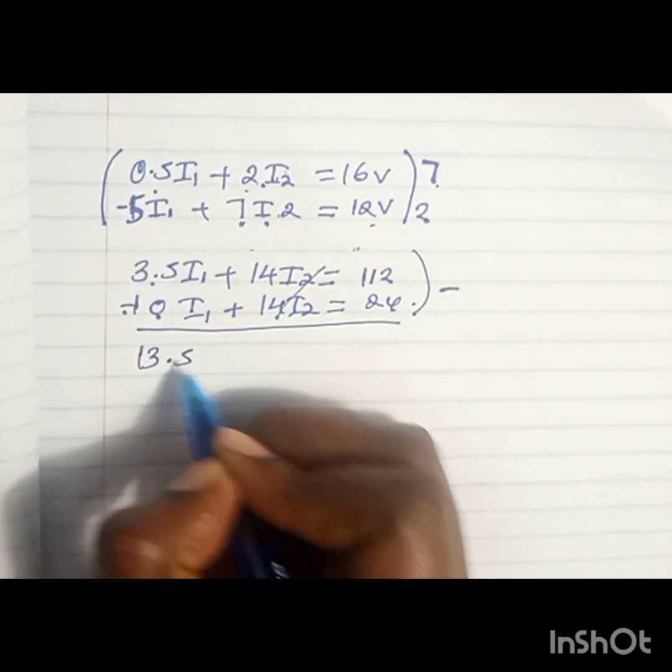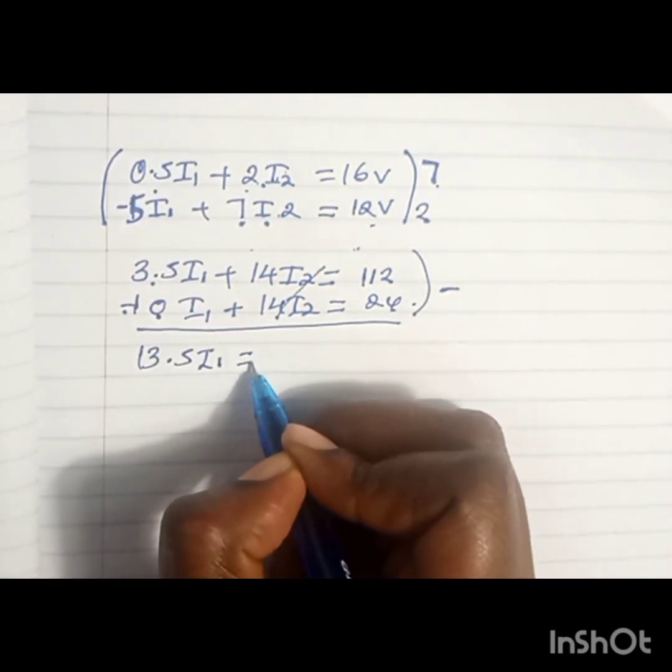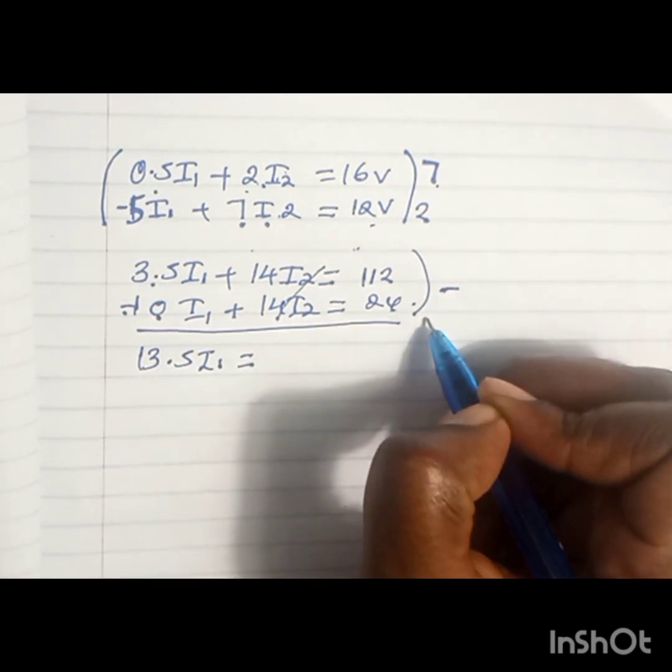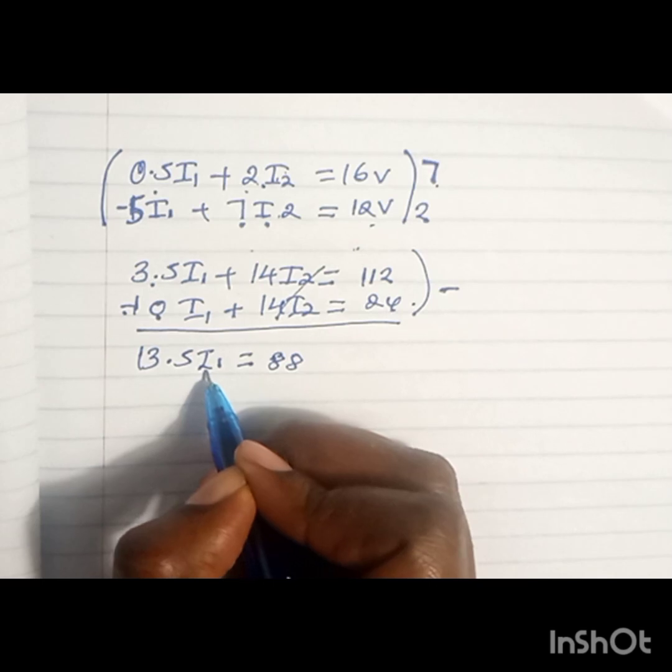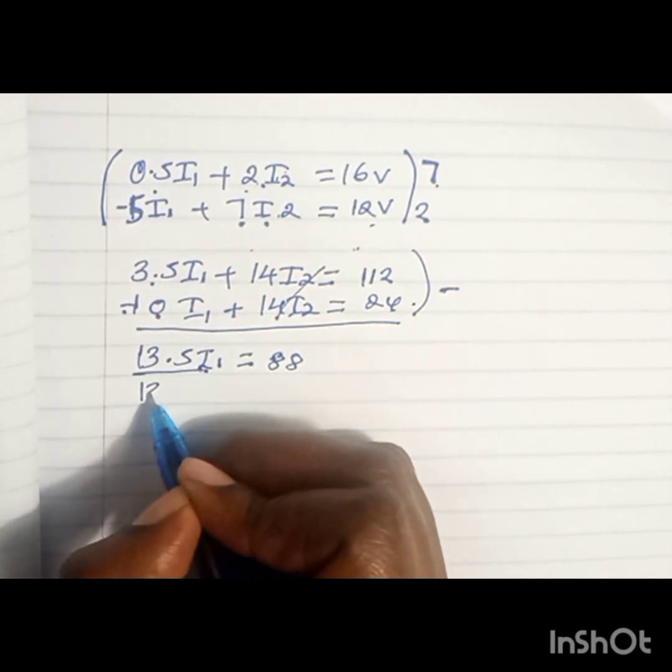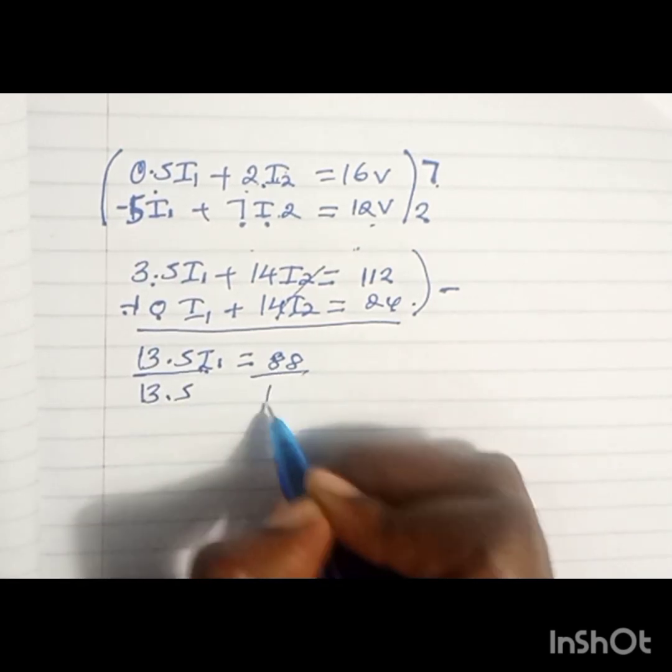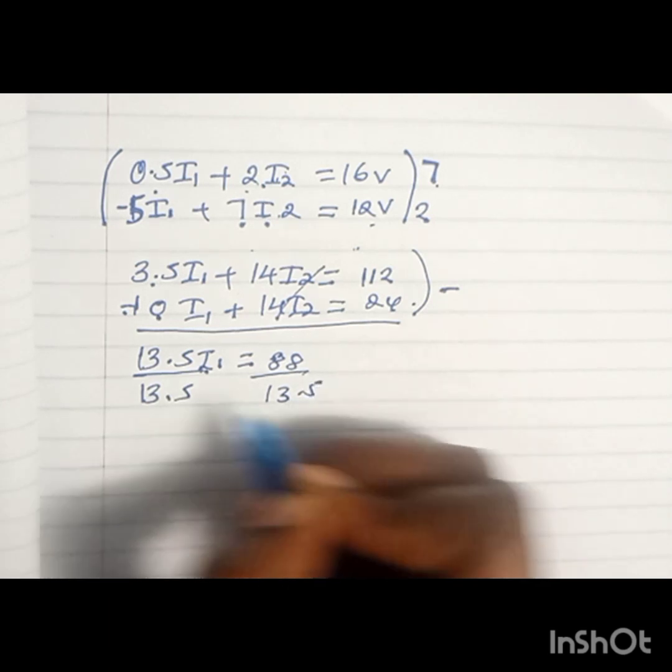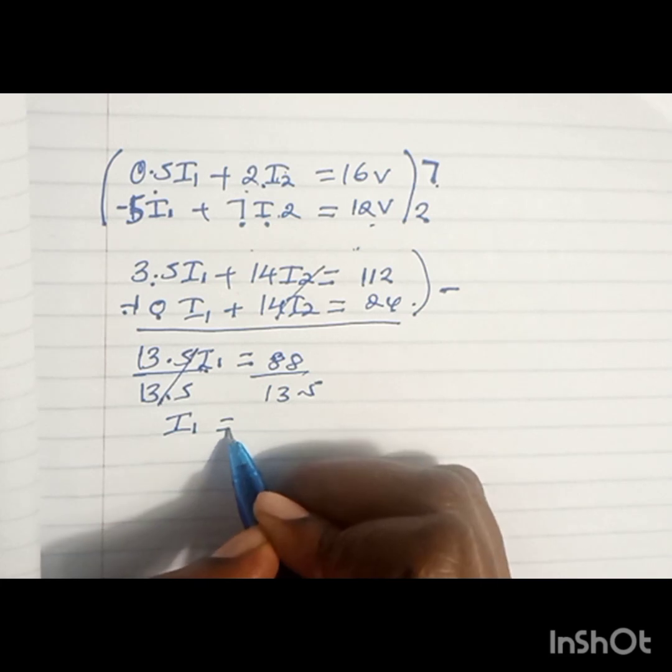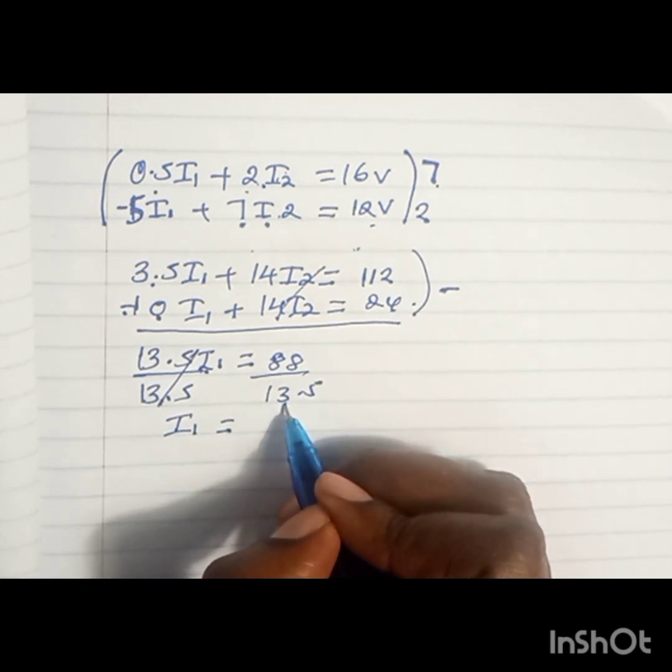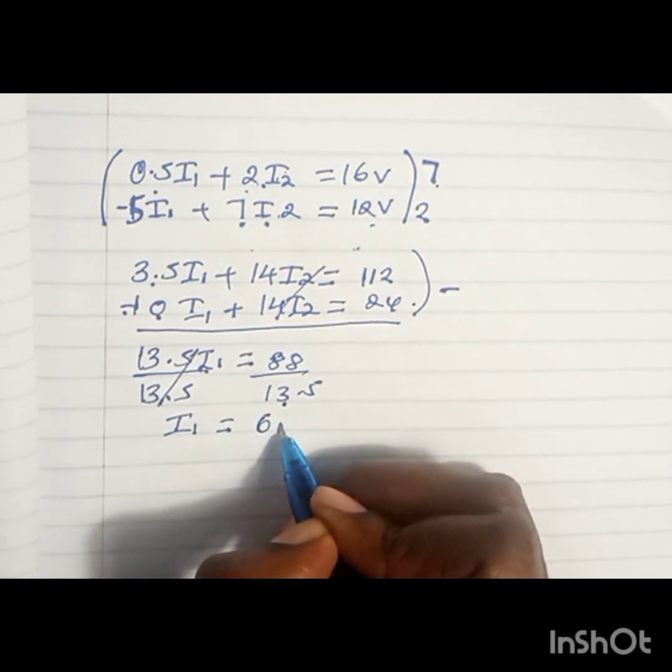13.5I1 equals 112 minus 24, which is 88. For us to get I1, we divide by 13.5 so that this will cancel out. Our I1 becomes 88 over 13.5, which is 6.519 amperes.